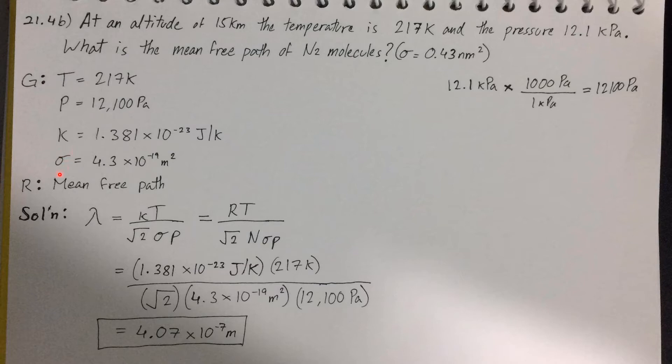Lastly, sigma here is the collision cross-section of the nitrogen gas molecules, which is equal to 0.43 nanometer squared. However, I converted it into meter squared, giving me 4.3 times 10 to negative 19 meters squared.